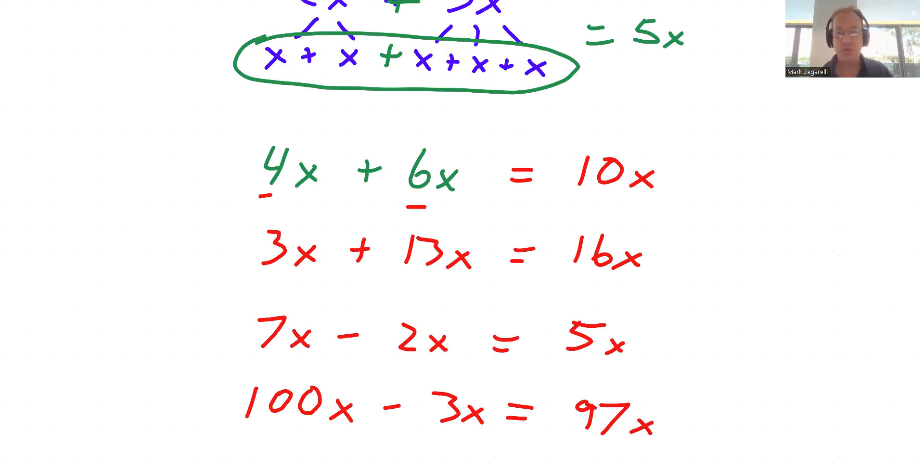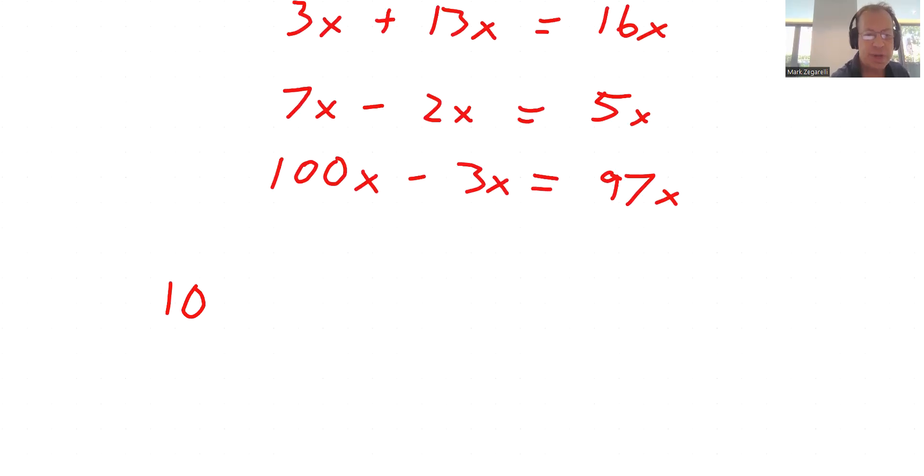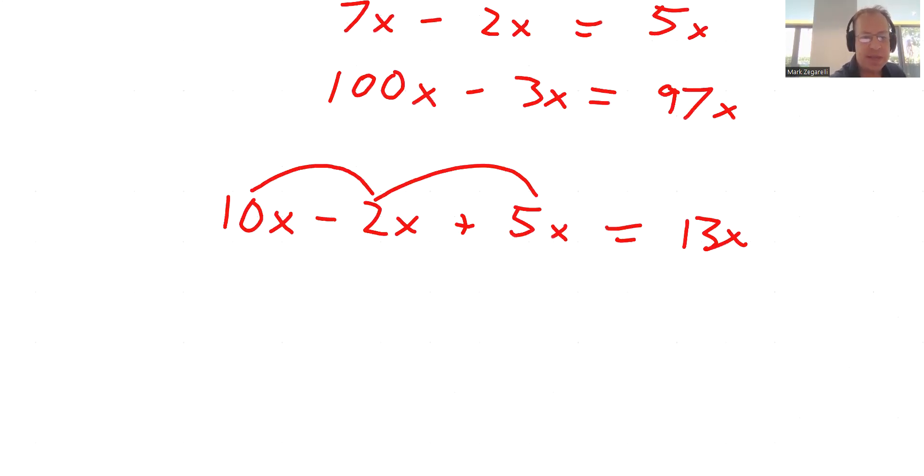So for addition and subtraction, these rules work perfectly. And we can mix them up. We could say 10x minus 2x plus 5x. We could either just go along and do this or break it into several pieces. 10x minus 2x is 8x, plus 5x is 13x.